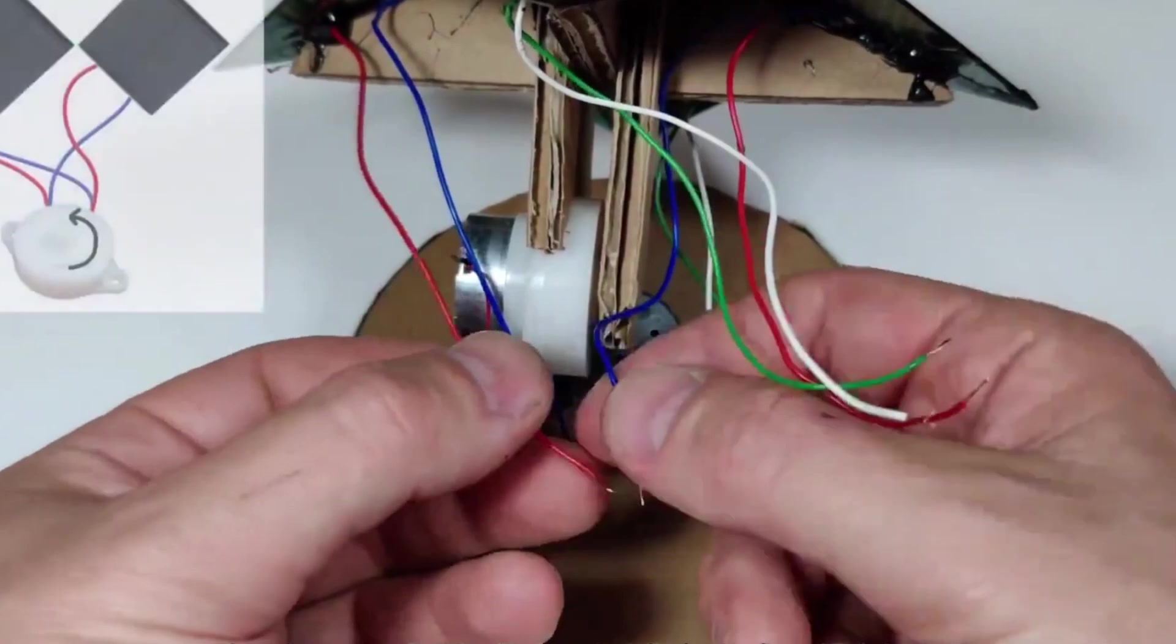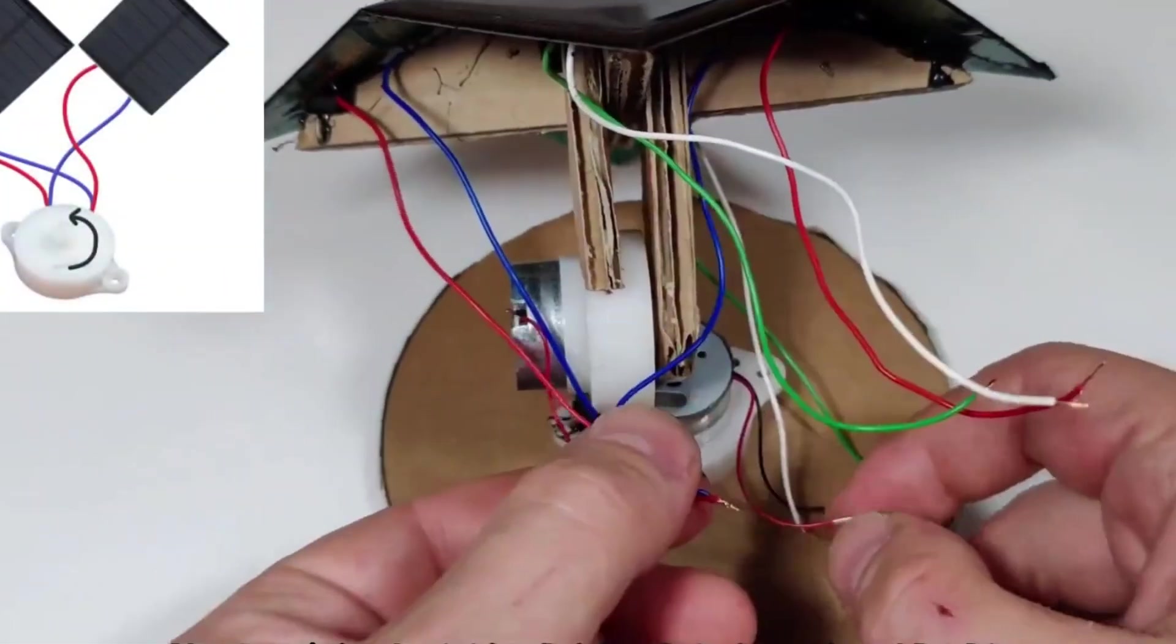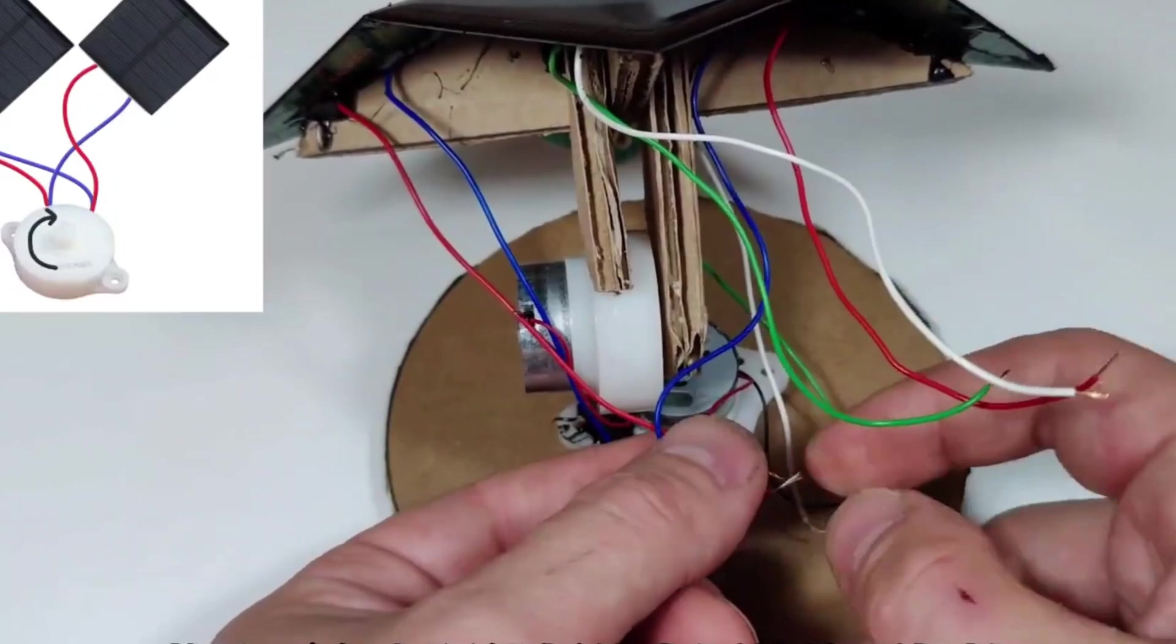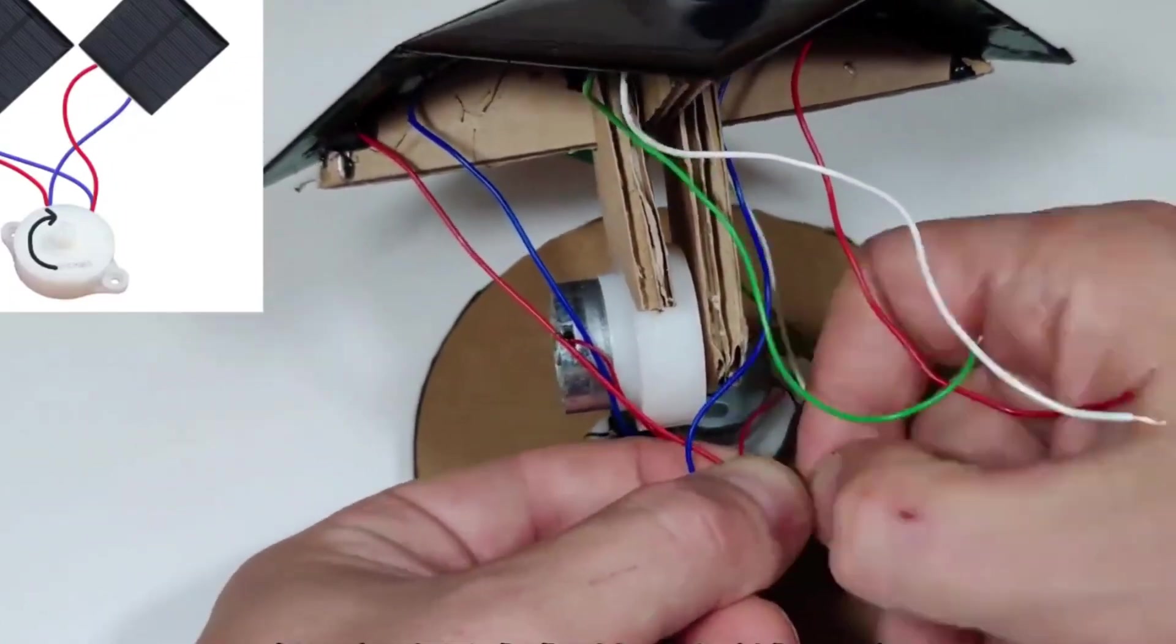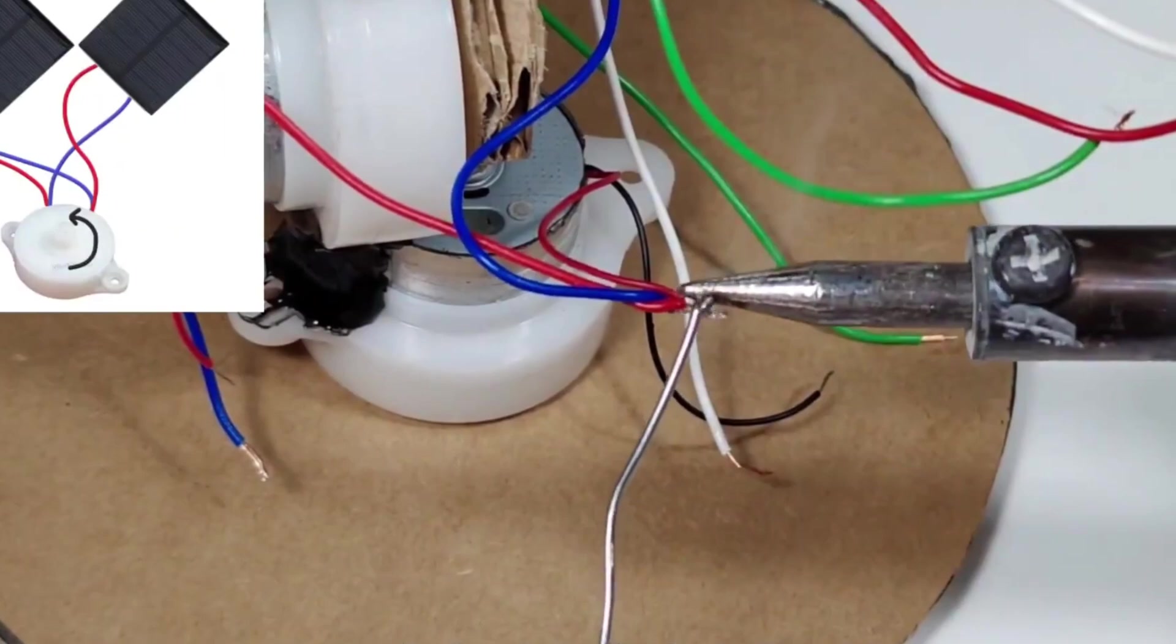Now, let's connect the wires. The two solar panels on the left and right sides will control the horizontal motor. Connect their wires together in opposite polarity. Then, connect them to the motor.